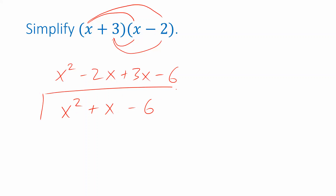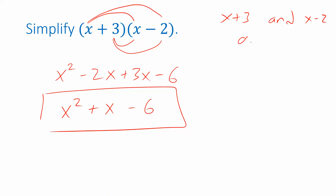This is what we get when we expand a product of two binomials. Each of these is called a binomial — x plus 3 and x minus 2 are binomials. The prefix 'bi' means two; each of these has two terms in it, that's why they're called binomials. The result we got has three terms, so it's called a trinomial.